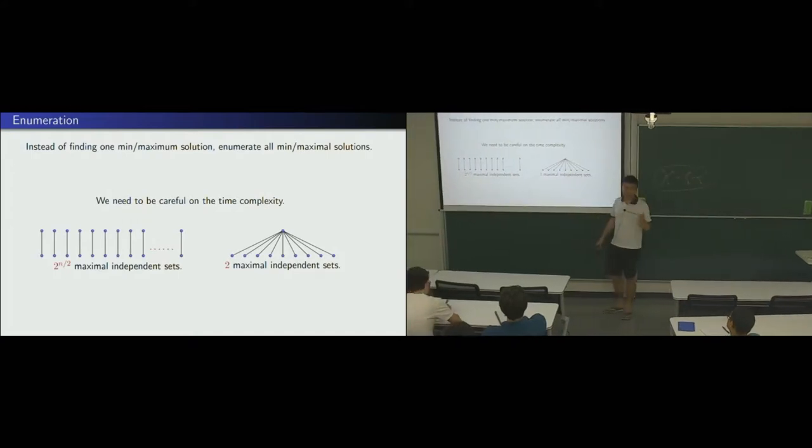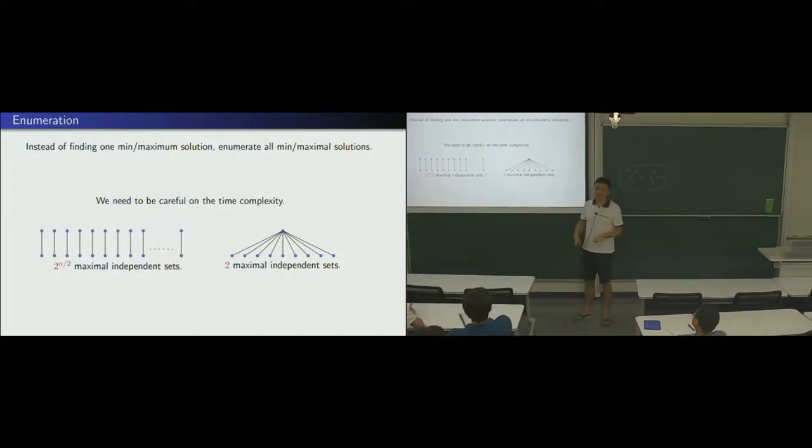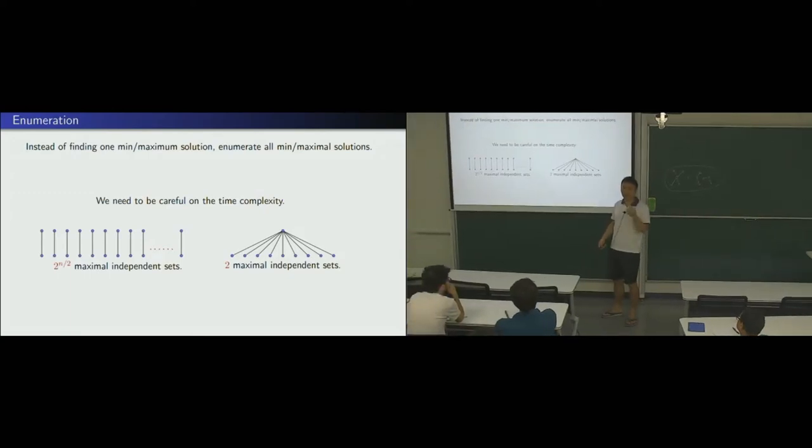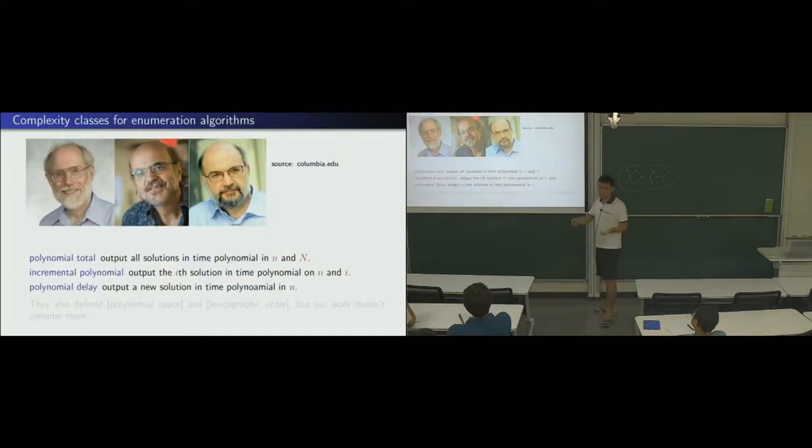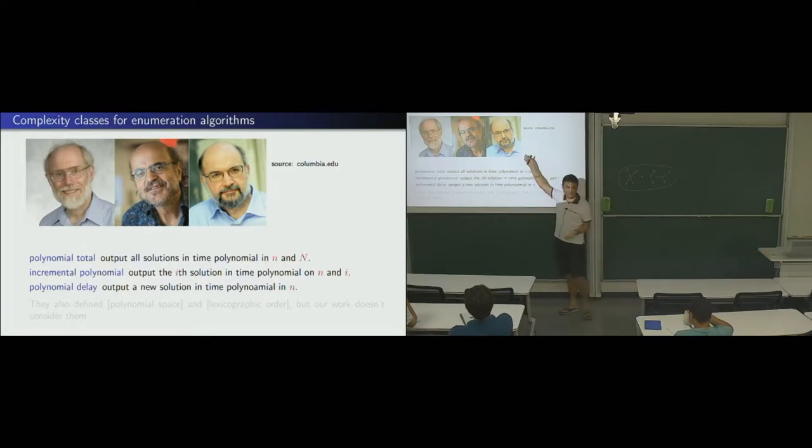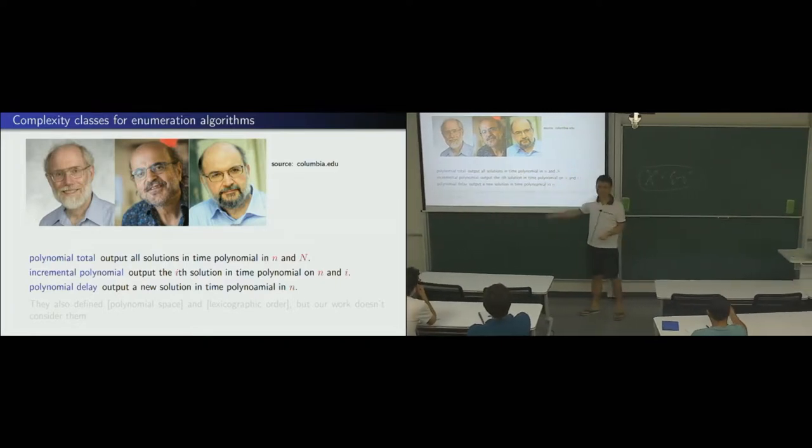So actually, this has only two solutions. So the idea is this. It's kind of like parameterized algorithm. You have more than one variable for the complexity. You count input and output. So the running time depends on both input and output size. Okay? So again, whoever knows, if you want some complicated classes, that's defined by them, right? Especially Papadimitriou and Yannakakis. Great people.